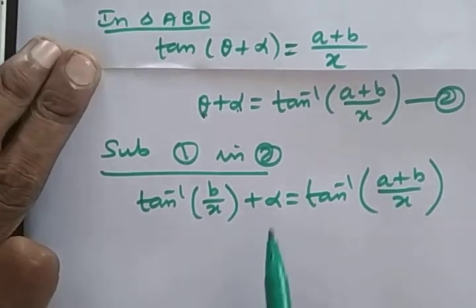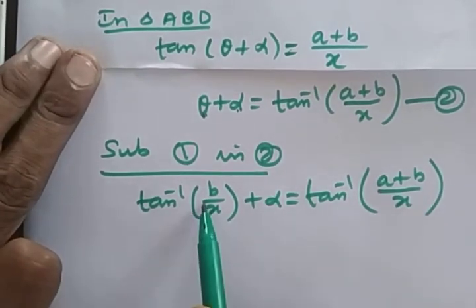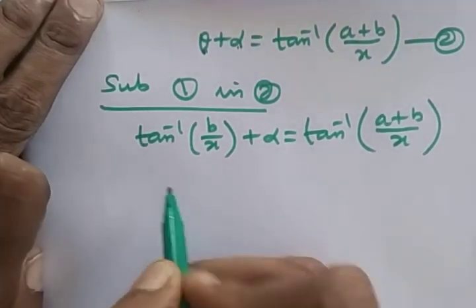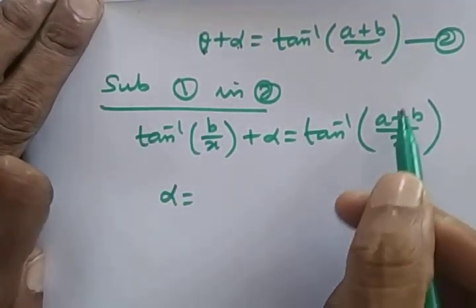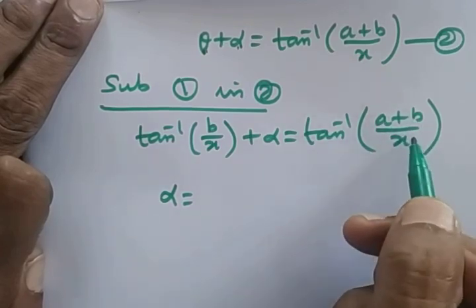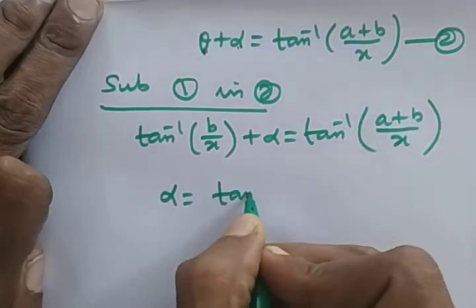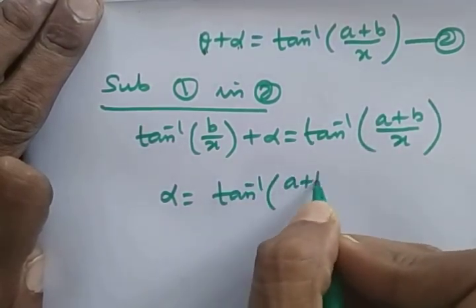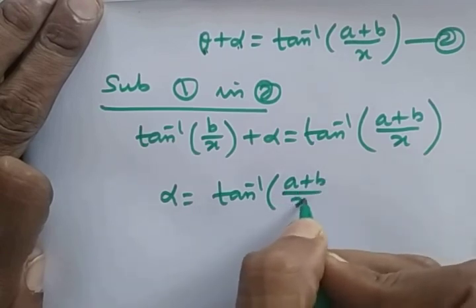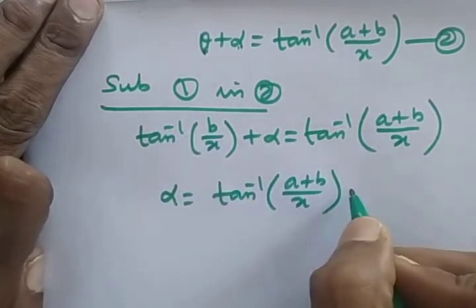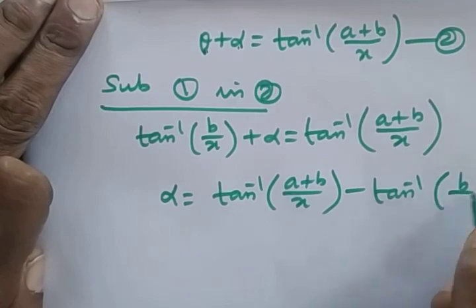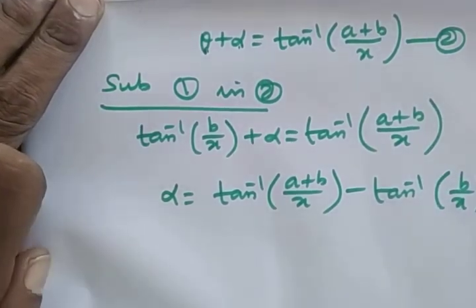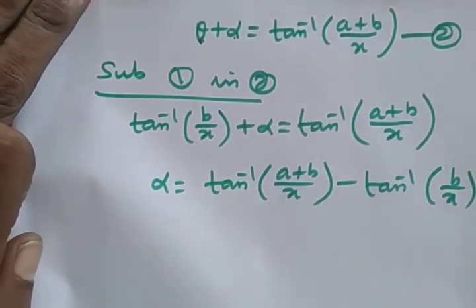Therefore, alpha = tan⁻¹((a+b)/x) − tan⁻¹(b/x). This completes the proof.